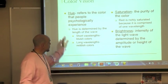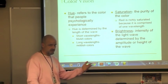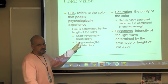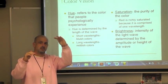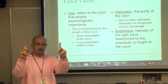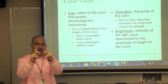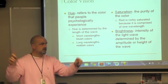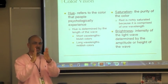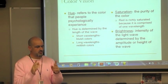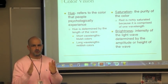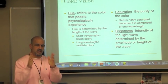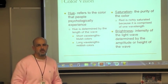In color vision, hue refers to the color people psychologically experience — red, green, blue, and so on — determined by wavelength. Short wavelengths produce bluish colors (like Smurfs), long wavelengths produce reddish colors (like Clifford the Dog), and medium wavelengths produce greenish colors (like leprechauns). Saturation refers to the purity of a color: red is richly saturated because it has one wavelength, while pink is less pure because it combines many wavelengths.